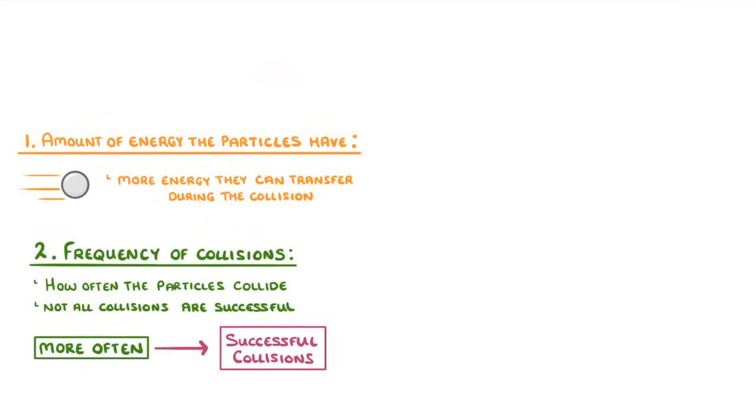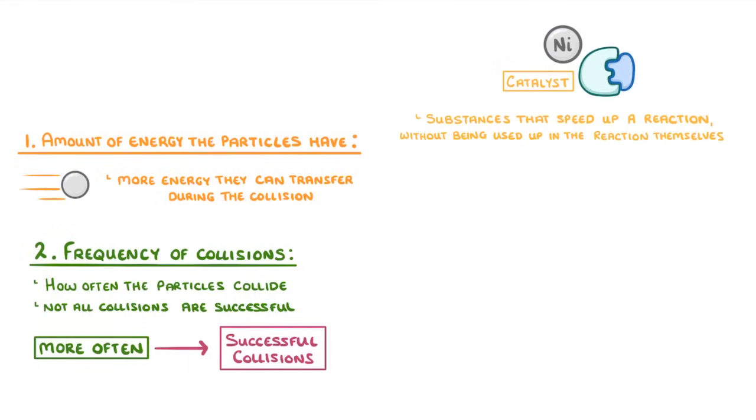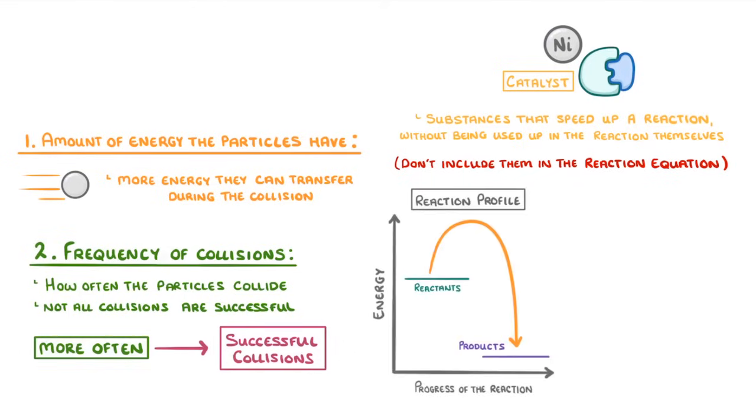The last factor that we need to cover is the presence of a catalyst. Catalysts are substances that speed up a reaction without being used up in the reaction themselves, so we don't include them in the reaction equation, as they're not reactants or products. To understand how they work, we can use a reaction profile, which shows the change in the chemical's energy during a reaction.